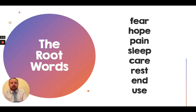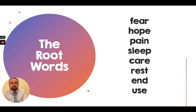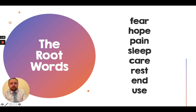Here are our root words, and a neat thing with this suffix is that unlike other suffixes where you need to drop or add letters, all you need to do with 'less' is add it on to the end of words. So if you can remember how to spell these root words, you've done your job. Our root words are: fear, hope, pain, sleep, care, rest, end, and use. Now let's add the suffixes.